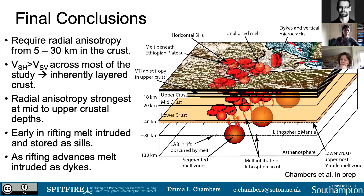Potentially what we're seeing is that early in the rifting process, melt seems to be intruded and stored as sills, and as rifting advances to larger, wider rifts, the melt becomes focused to the rift axis and is intruded as vertical dikes.